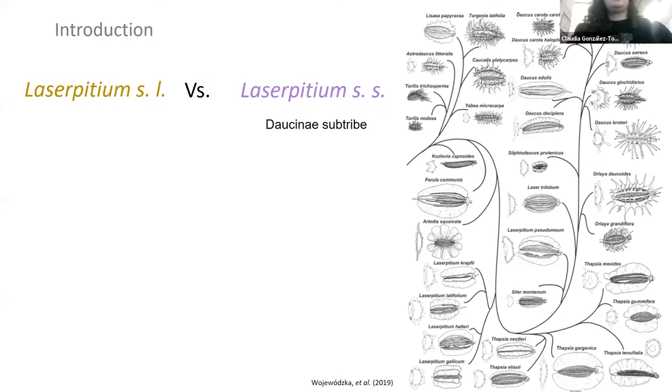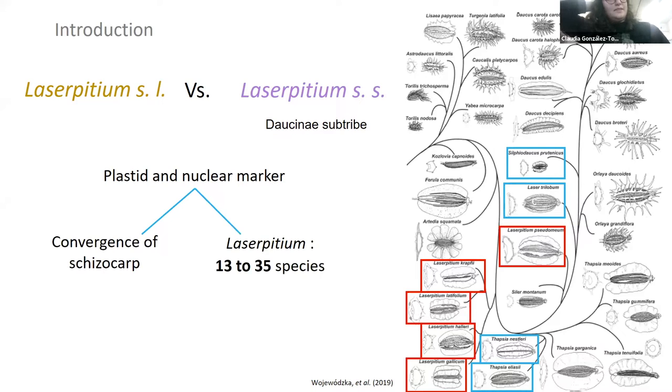In this context, the molecular tools arrived and focused on plastid and nuclear markers and have been fundamental to reveal that the schizocarp features are convergent within the genera of Daucinae, so they cannot be used to generate natural groups as they are thought to be homoplastic. As a consequence, if we use the two different concepts of Laserpitium, we found that this genus has from 13 to 35 species.